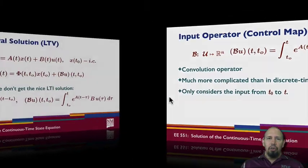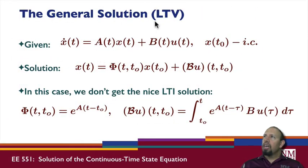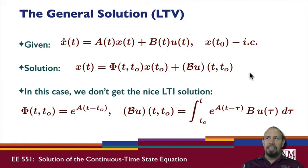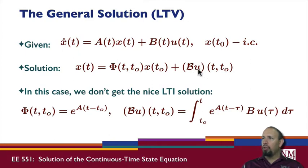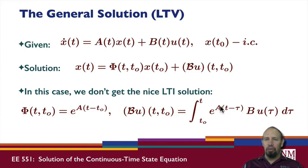In general, the solution for a linear time-varying problem — where A and B are both functions of time — has the same apparent form: a state transition matrix times the initial condition plus the control map operating on u. However, in this case the state transition matrix is not simply e^(At), and the control map is not this simple convolution integral; we still get a convolution integral, it's just not that simple.